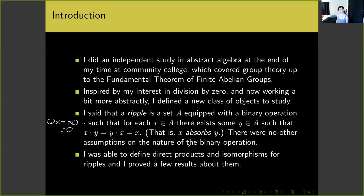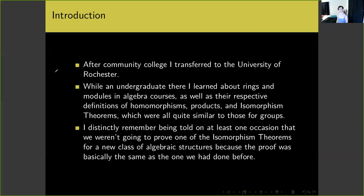There were no other assumptions I made on the nature of the binary operation for these ripples. I was able to define direct products and isomorphisms for ripples and proved a few results about them. After community college I transferred to the University of Rochester. While an undergraduate there I learned about rings and modules in algebra courses, as well as their respective definitions of homomorphisms, products, and the isomorphism theorems, which were all quite similar to those for groups. I distinctly remember being told on at least one occasion that we weren't going to prove one of the isomorphism theorems for a new class of algebraic structures because the proof was basically the same as the one we had done before.